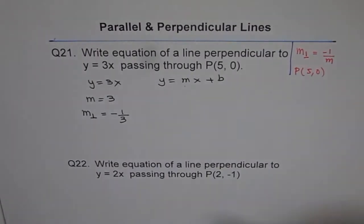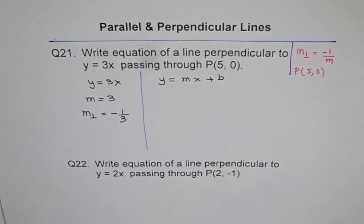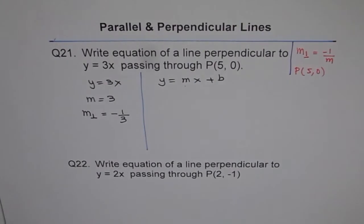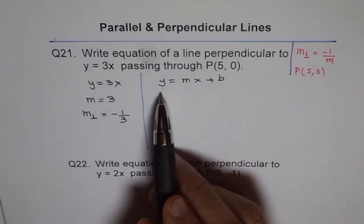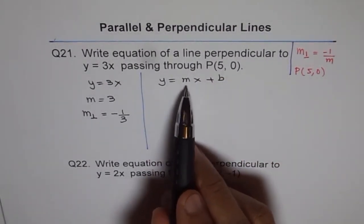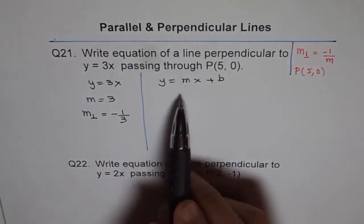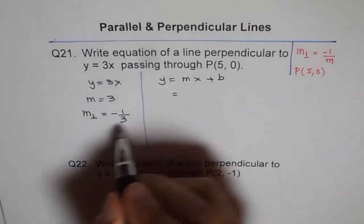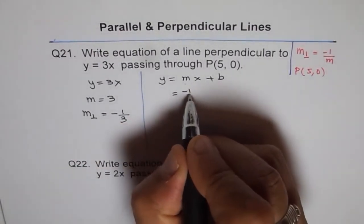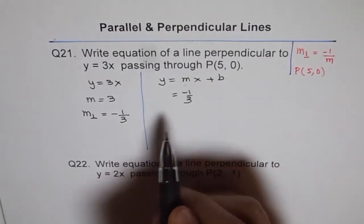Okay, so that's a good information. With this, we can write down equation of our line. So let the equation of our line be in the form of y equals mx plus b. Now here, what is m for us? m is minus 1 over 3. What is x and y?